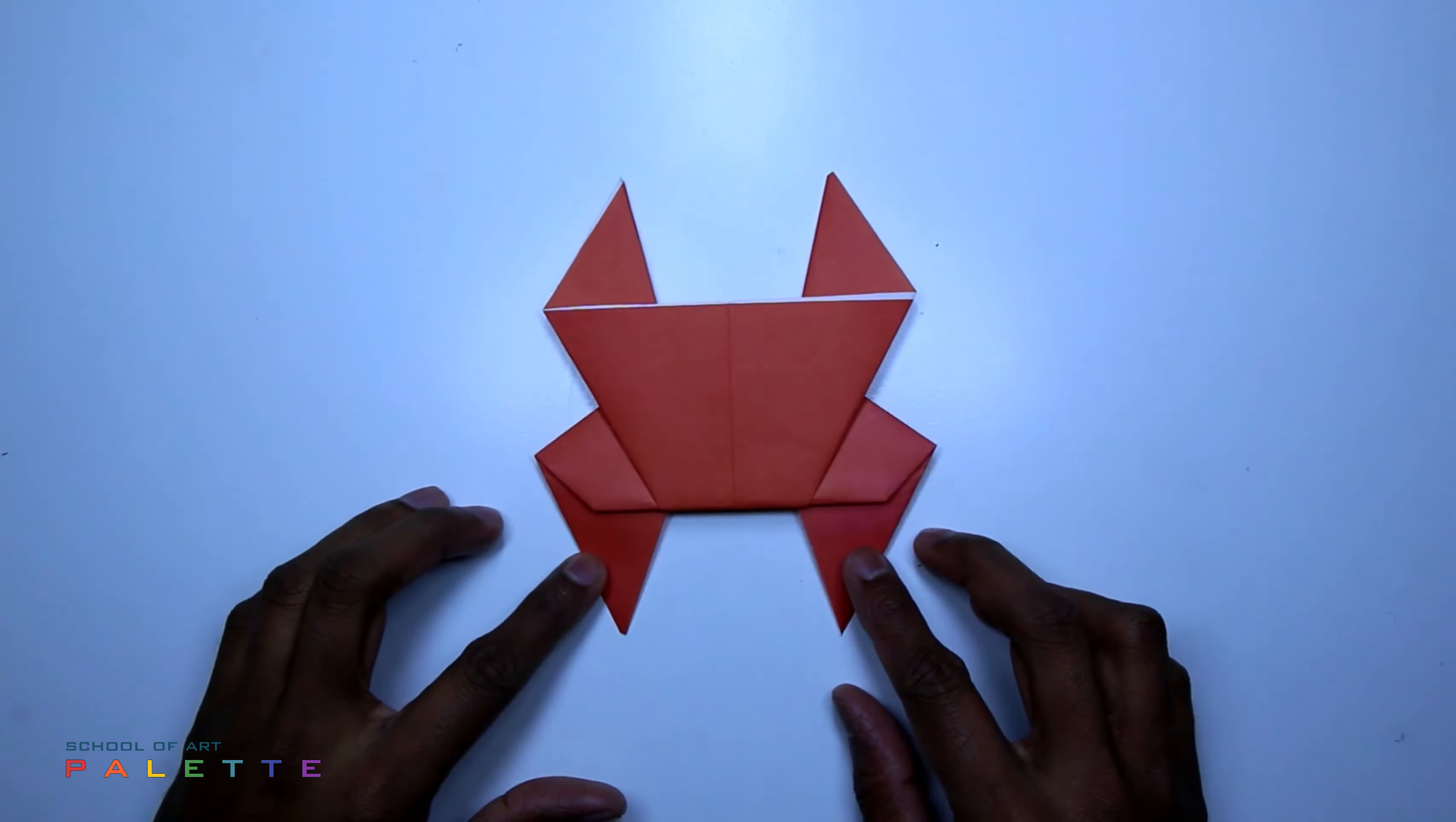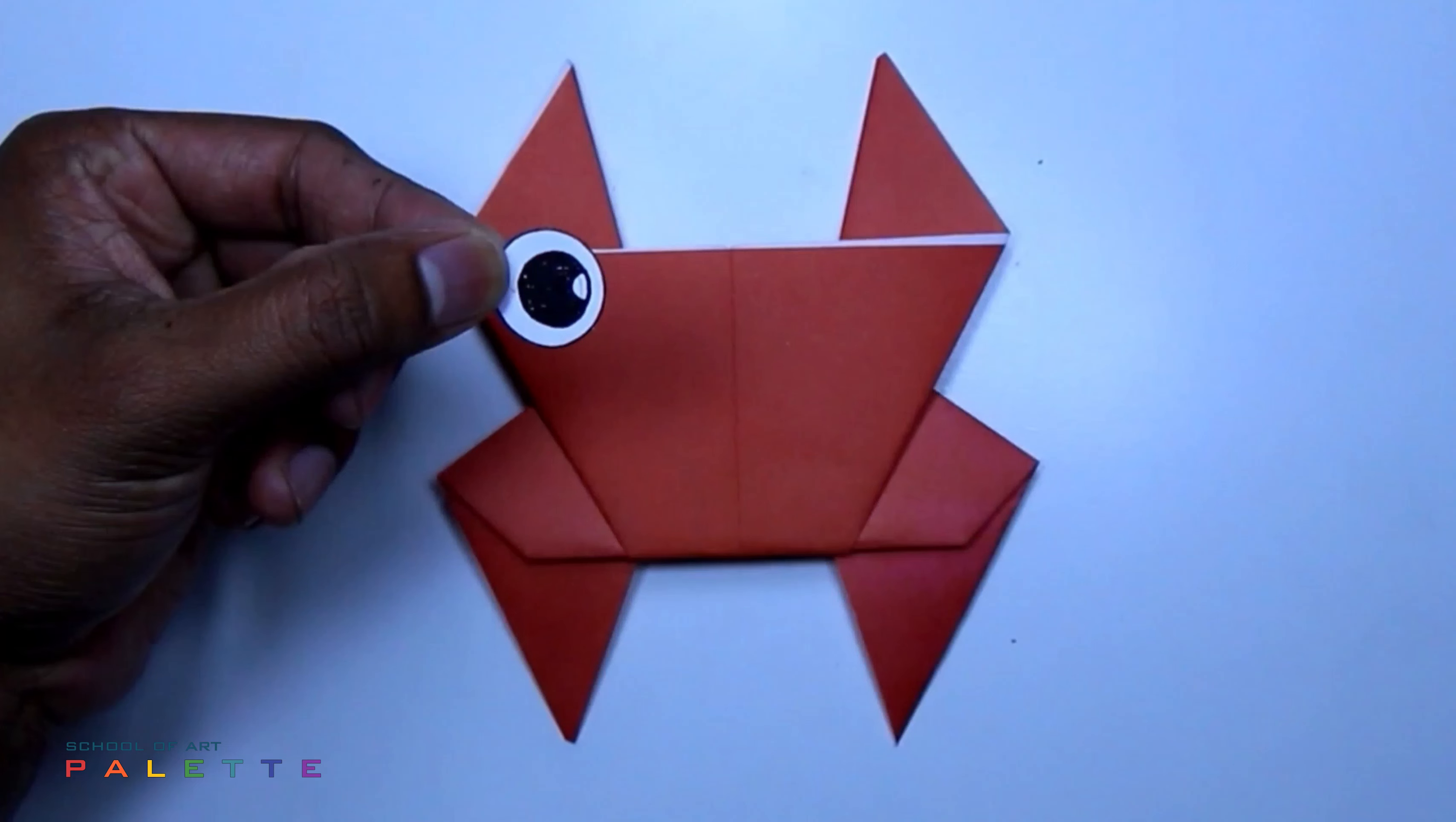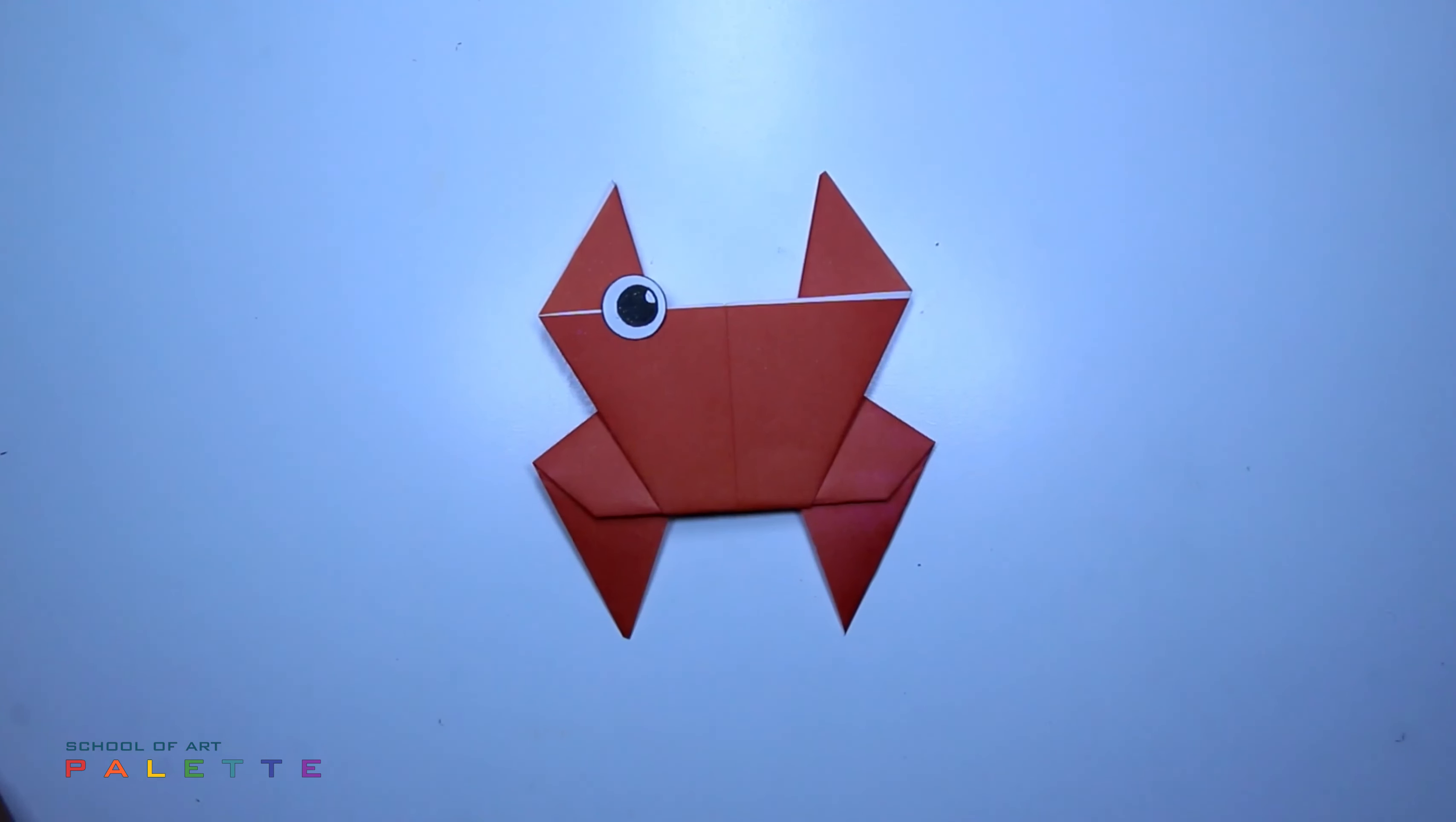See, our crab is ready. Take a small round shape paper. Inside, make it dark like this. Keep little white. Paste it here. Here also, same way.